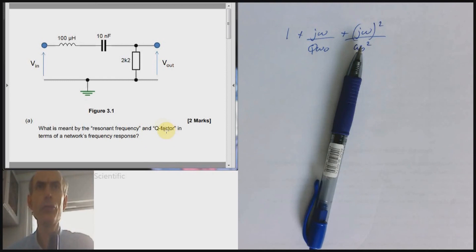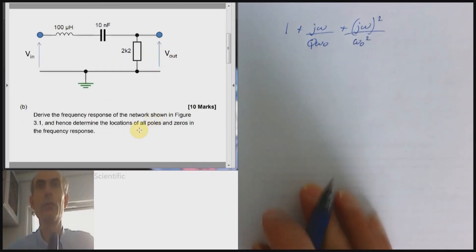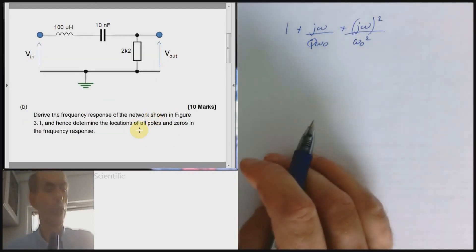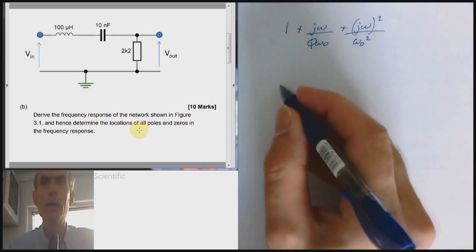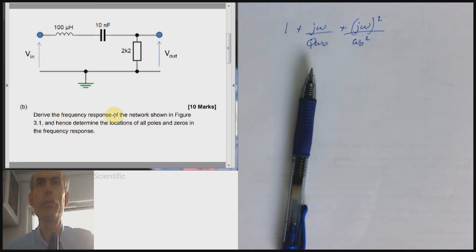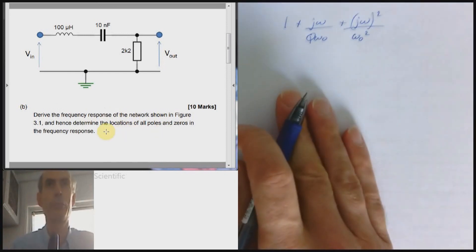Right. Moving on to the second part of the question. And we actually have a network to analyze. Okay. Derive the frequency response and determine location of all poles and zeros. Well, standard type of problem.